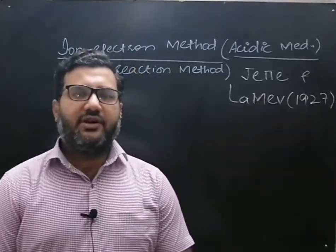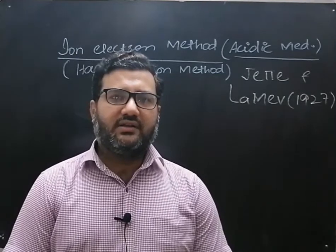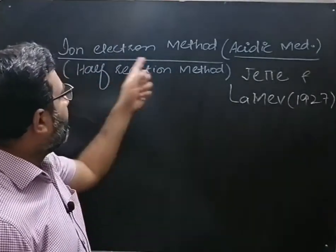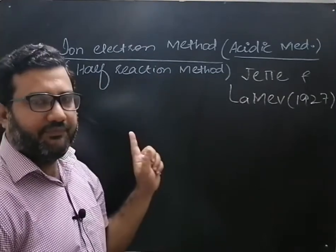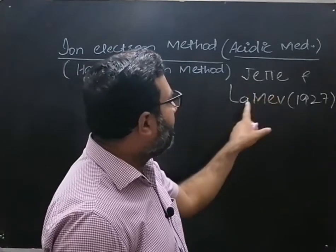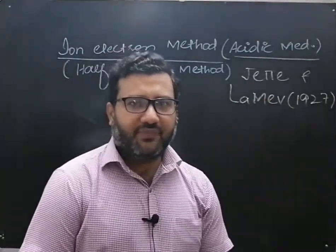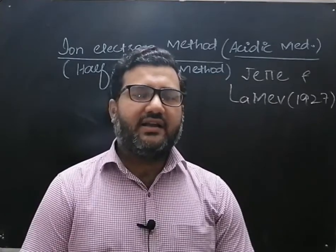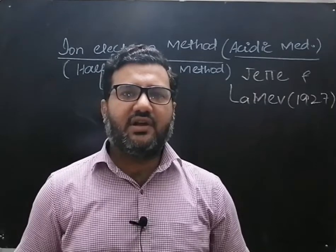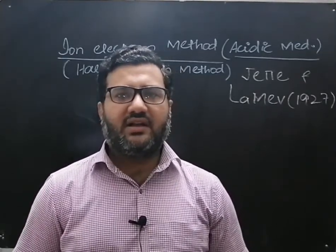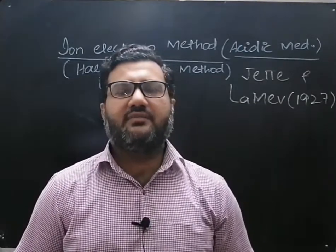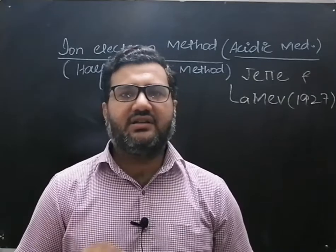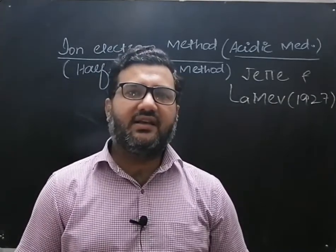Welcome everyone. In this lecture we are going to talk about the balancing of redox reactions using the ion electron method. The ion electron method is also called the half reaction method, and this method was developed by Jette and Lomev in 1927. Some redox reactions take place in acidic medium, others in neutral medium, and some in basic medium. In this lecture we will study the rules and balancing of a redox reaction by the ion electron method taking place in acidic medium.